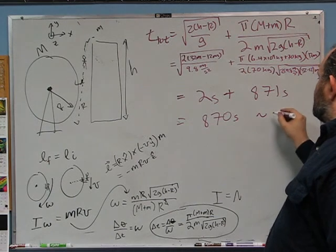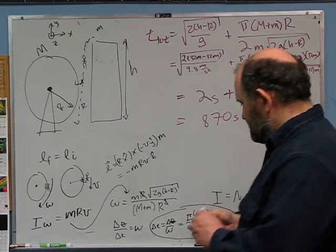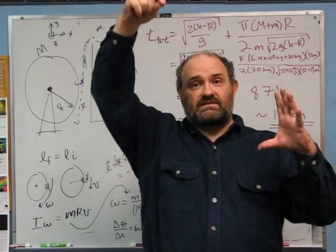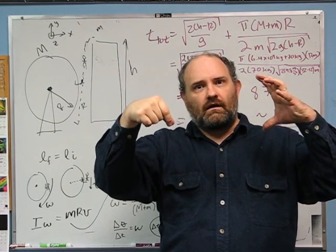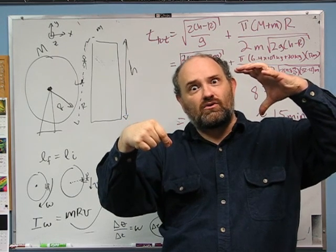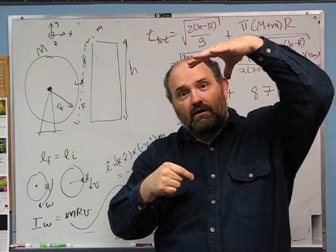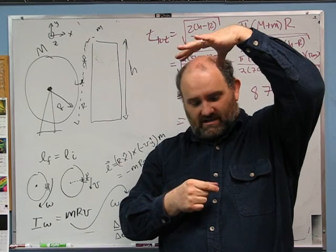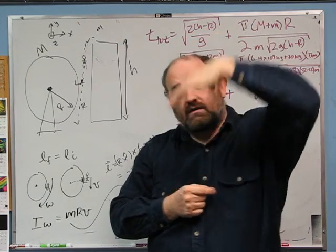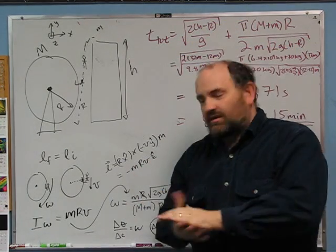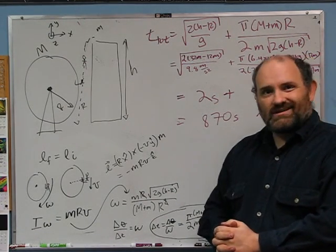So think about this in a movie. James Bond falls 2 seconds, hits the wheel, and then it slowly rotates over the course of 15 minutes. This is no longer a James Bond movie — this is now an art film. The real important thing is thinking about the energy conservation and the angular momentum conservation. I hope you got something out of that.